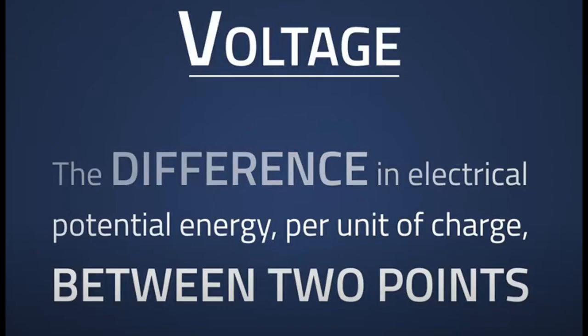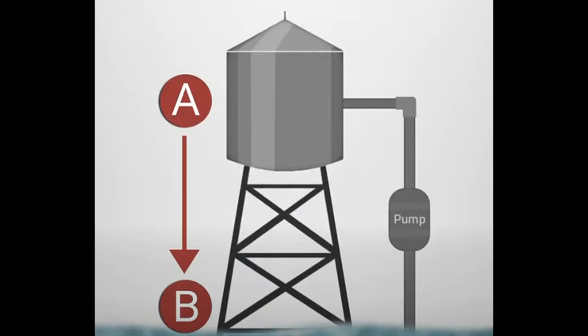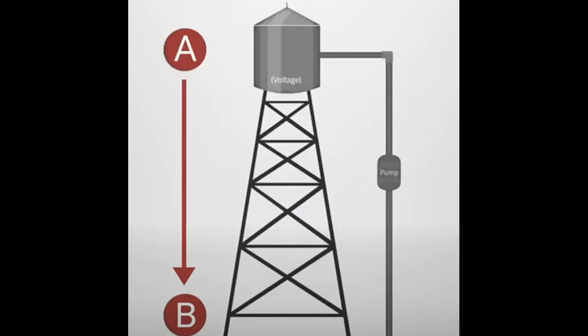Remember for a moment that the difference in electrical potential energy per unit of charge between two points. In elevated tank example, there is a force of gravity which is pulling the water from point A to point B. The voltage or potential energy will rise if we increase the difference between the two points.